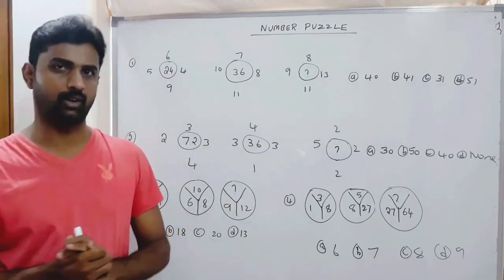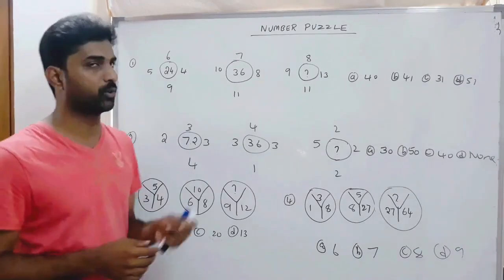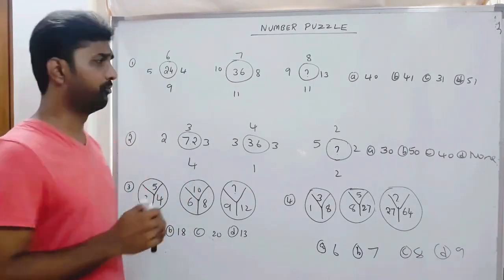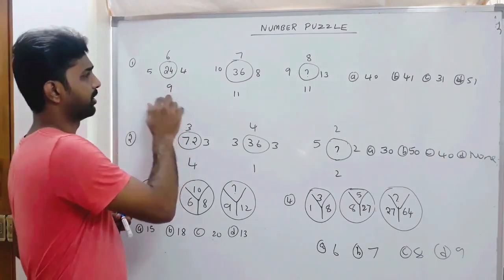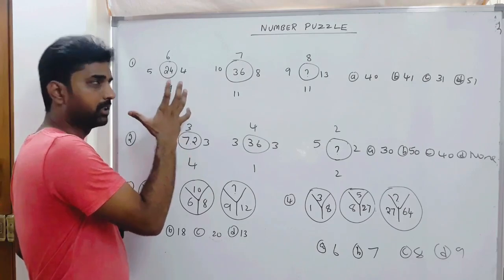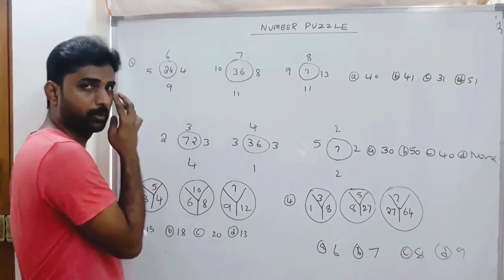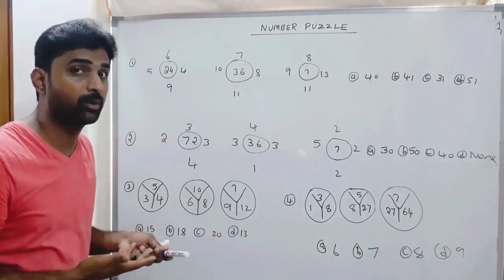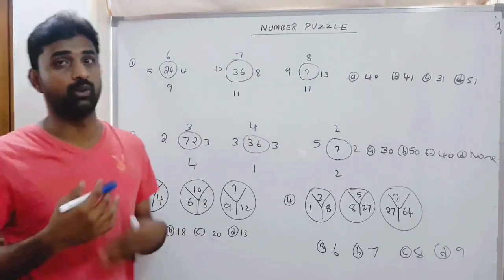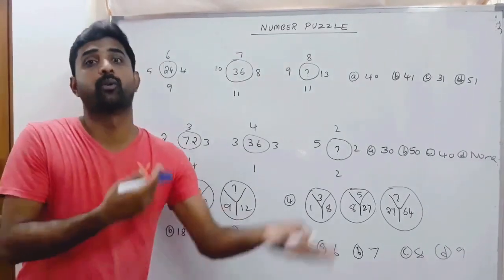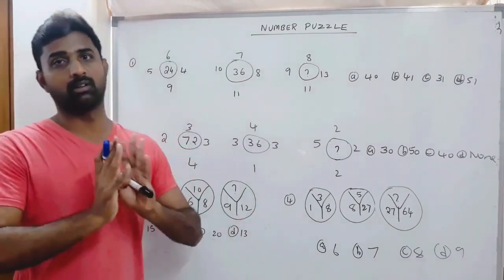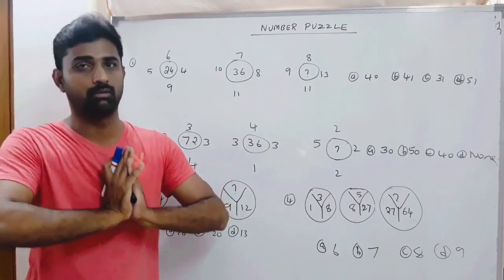Let us see the first question. We have some logic — outside is the number, inside is the number. What is the number? It may be addition, subtraction, multiplication, square roots, cube roots, or combinations. Anything is possible. You can use logic to try.